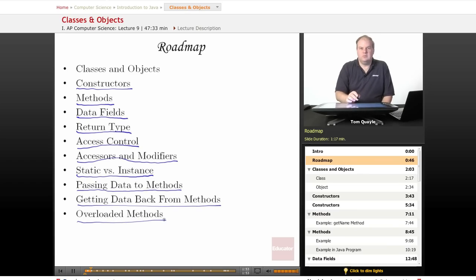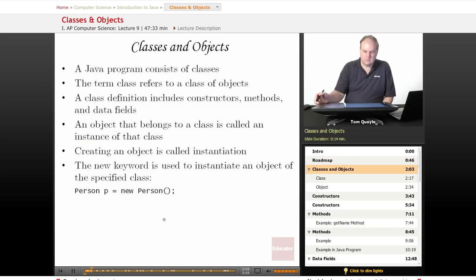So a lot of material in this lesson, but it's all very important to your understanding of Java and success on the AP exam. So let's get started. A Java program consists of classes. That's the fundamental structure of a Java program being an object-oriented programming language. And the term class refers to a class of objects.